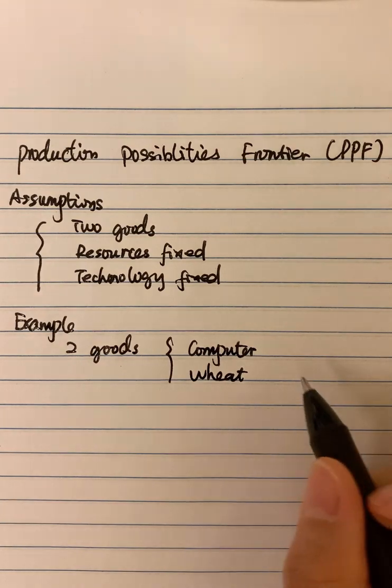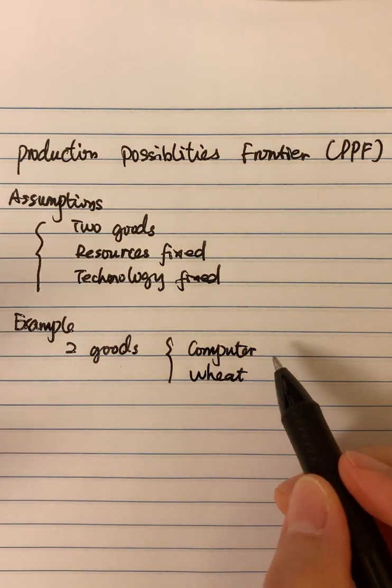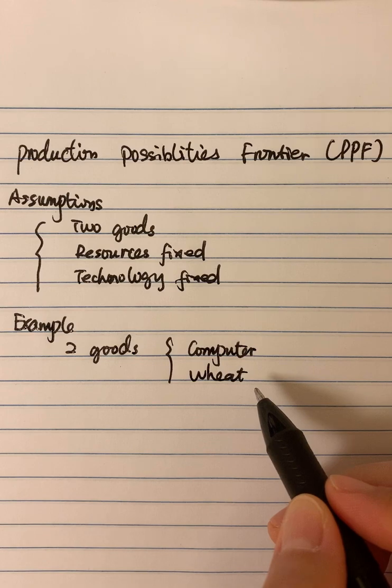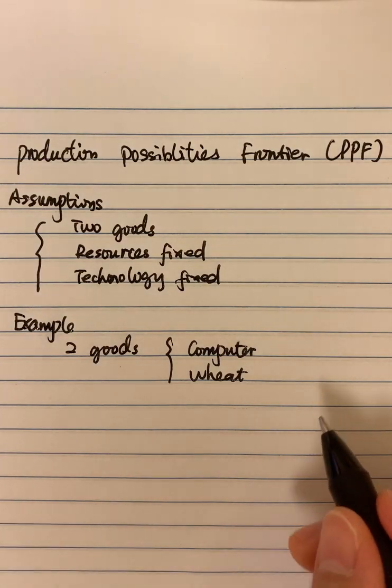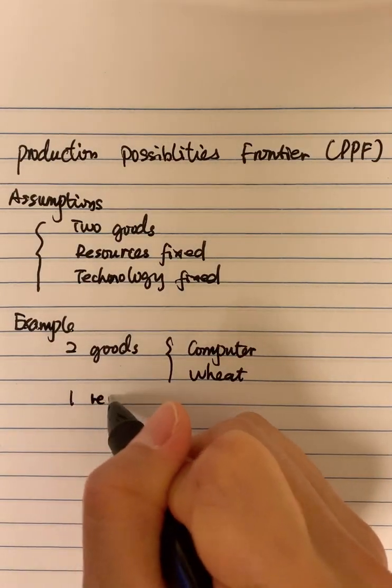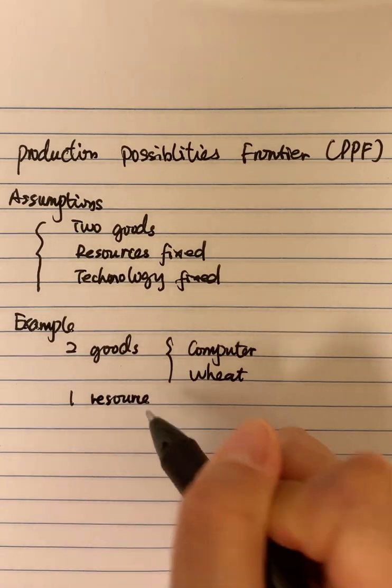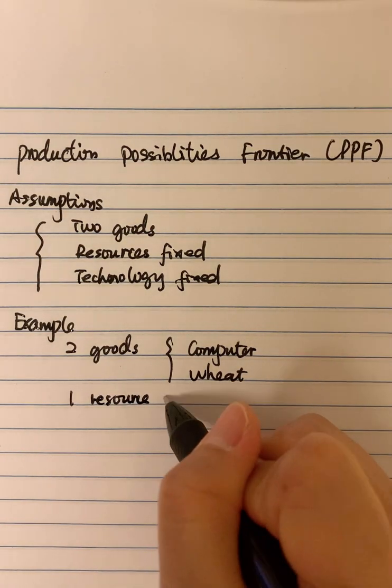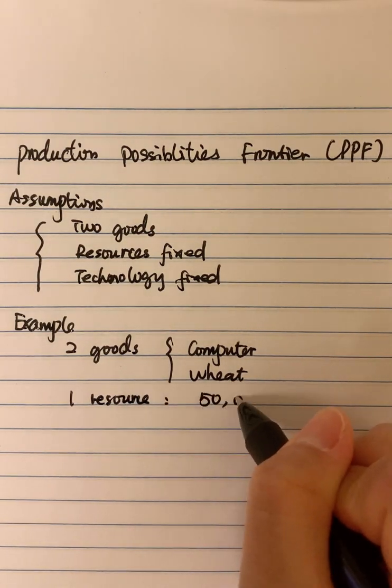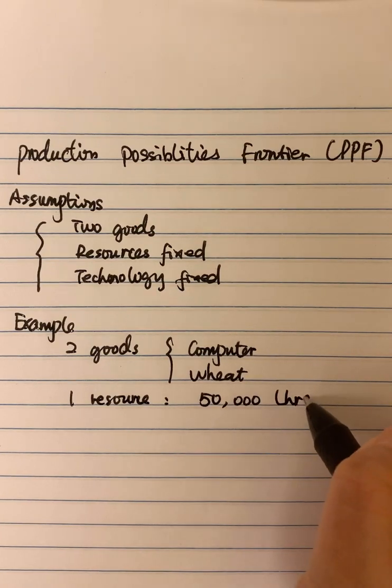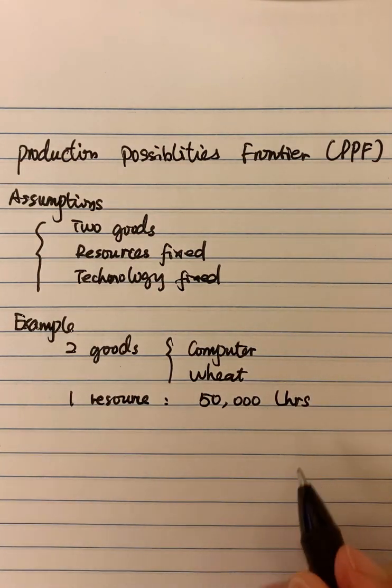Computer is measured by unit. Wheat is measured by tons. And then we only have one resource, and this one resource is fixed, which will have 50,000 labor hours available.